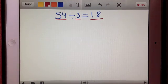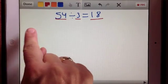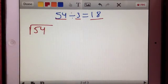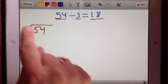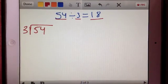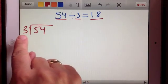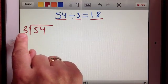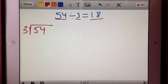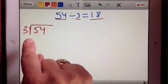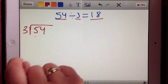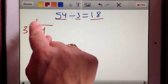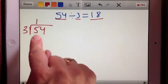So if we were to use the standard algorithm real quickly, we would write the 54 inside this little thing here, a little symbol, and write the three on the outside. And a lot of times when it's written this way, people think of it as how many times does three go into 54? But really what that means is how many groups of three do we have in 54? So the way the standard algorithm works is that first we will look at this first digit of 54, which is a five. How many times does three go into five? One time. One times three equals three.